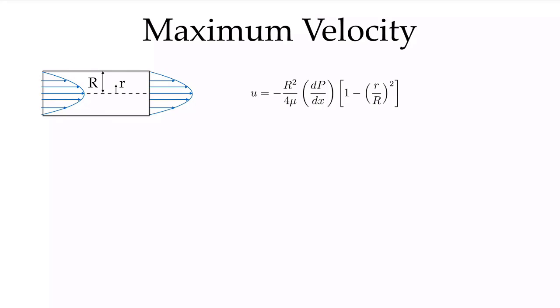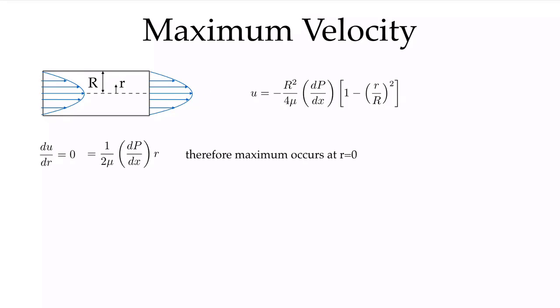We can look at the maximum velocity. We can see from the diagram that the maximum velocity occurs on the centerline. Mathematically, we take du/dr and set it equal to 0 to find the local extreme point. Since dp/dx is not zero and viscosity is not zero, the condition where this occurs is when r equals 0 — at the center of our pipe. We can confirm this is a maximum, and evaluate it by substituting r = 0 into our velocity expression.